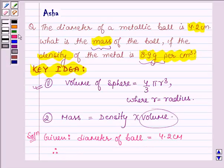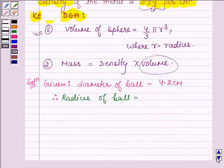its radius is equal to diameter upon 2, that is 4.2 cm upon 2 is equal to 2.1 cm.